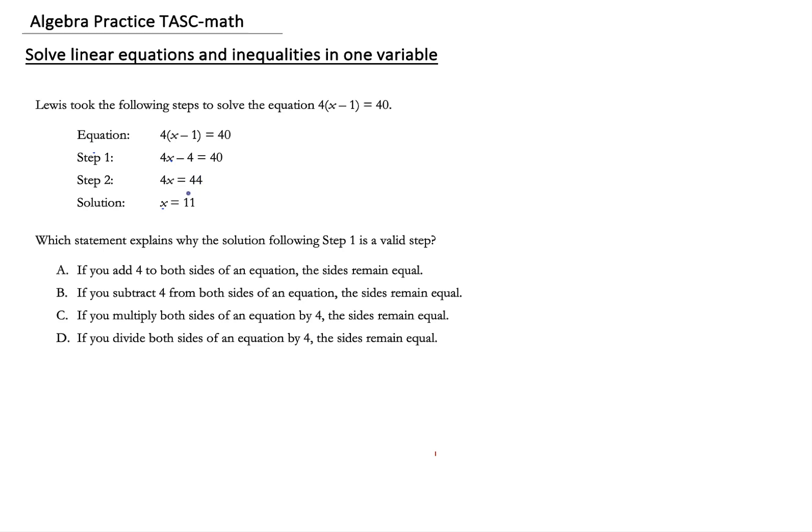The question says which statement explains why the solution following step one is a valid step. You have to read carefully with some of these questions. This says explain why the solution following step one is a valid step. Who follows step one? Step two. So we have to look to see who's following step one. A lot of students skip step two and go to solution, but it said explain why the solution following step one is a valid step. So they went from 4x minus 4 equals 40 to 4x equals 44.